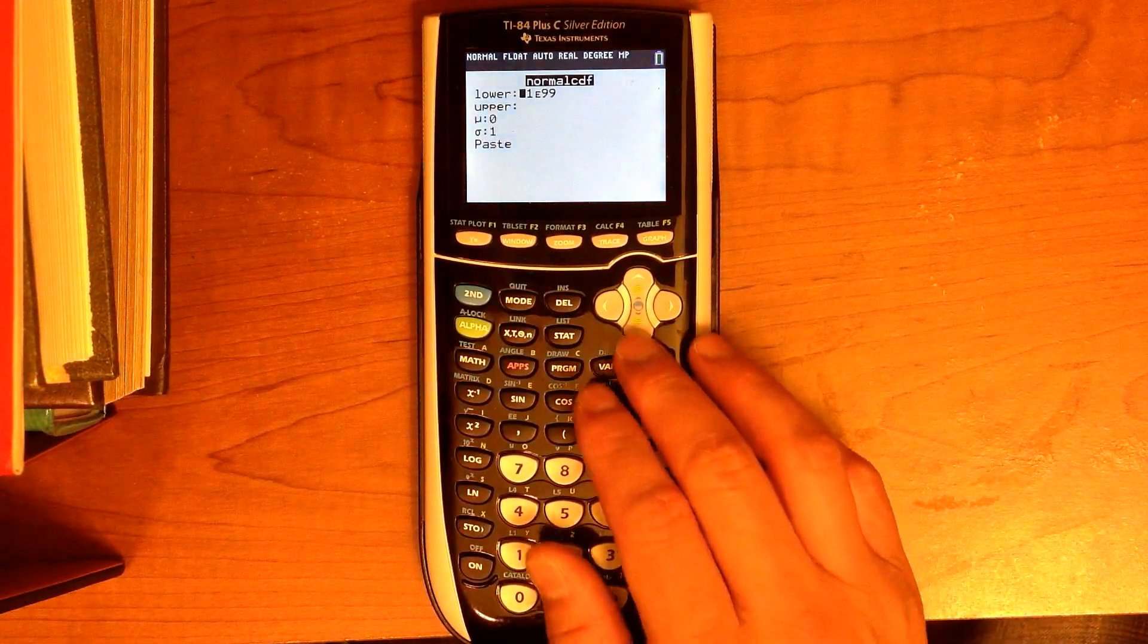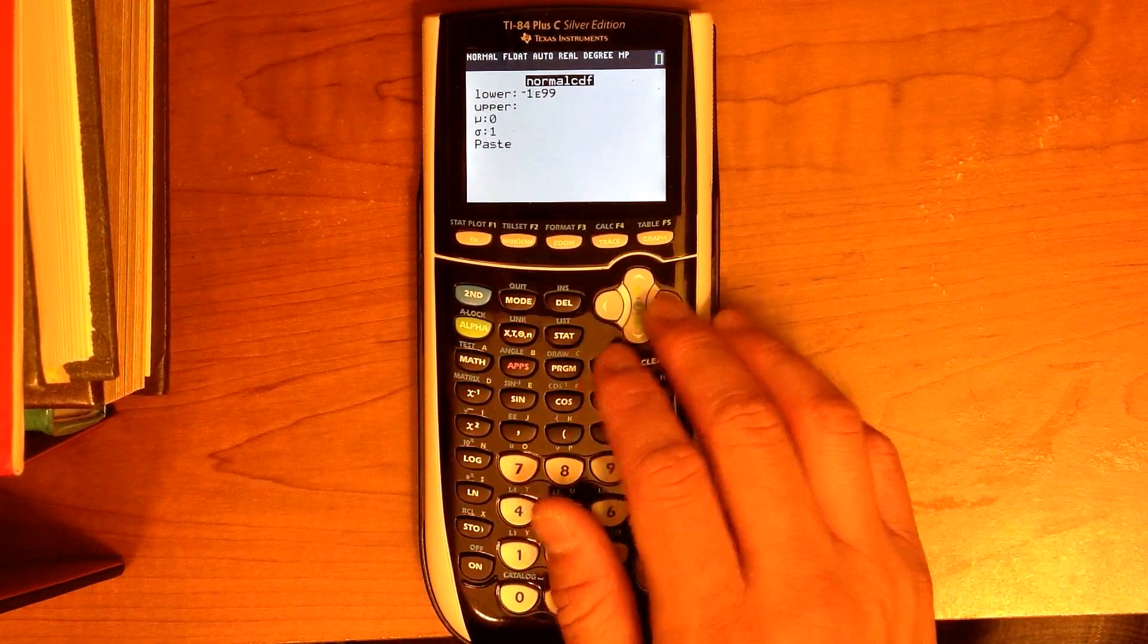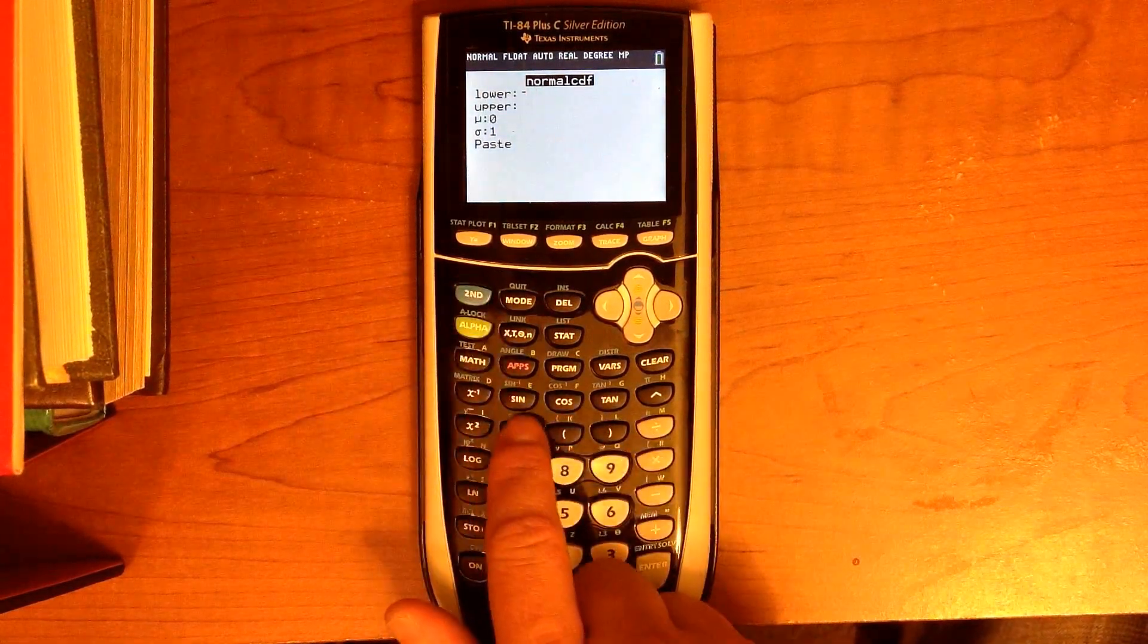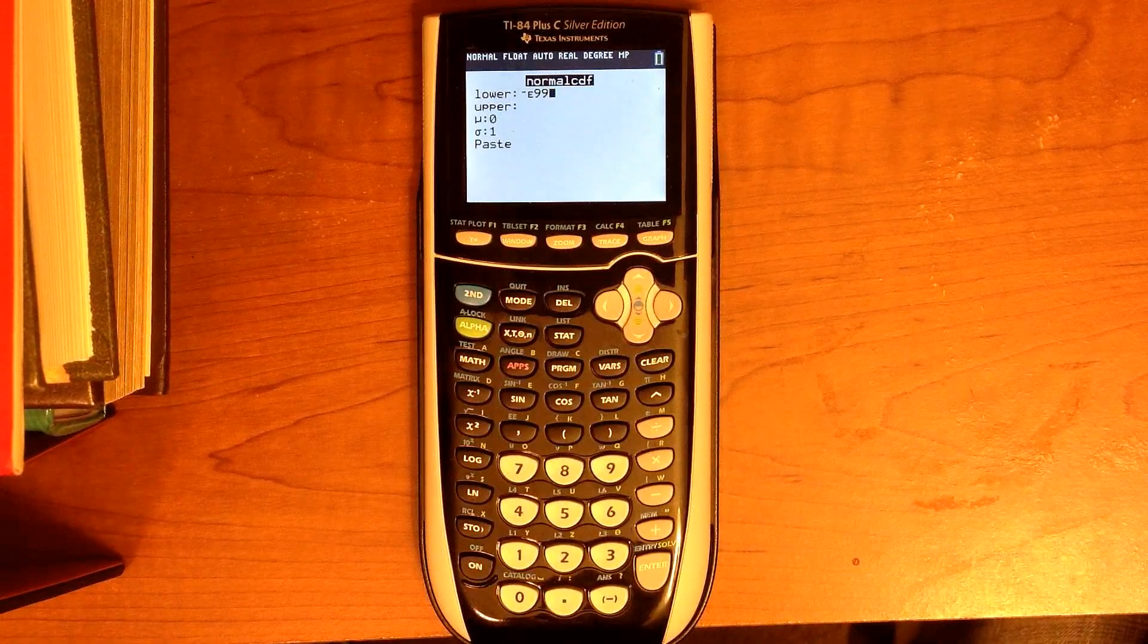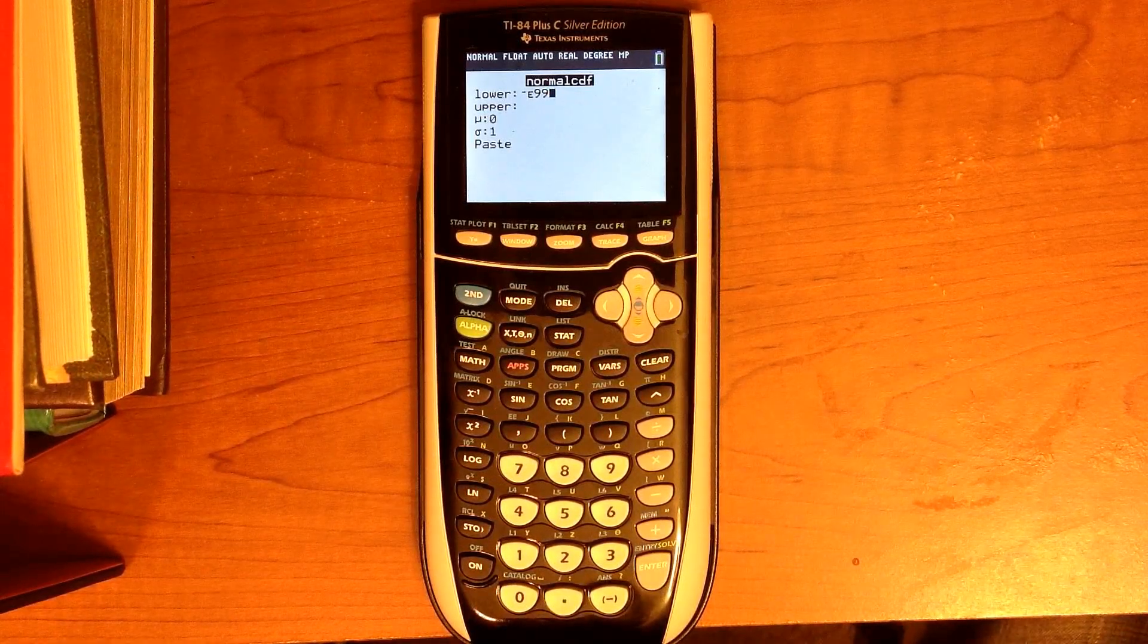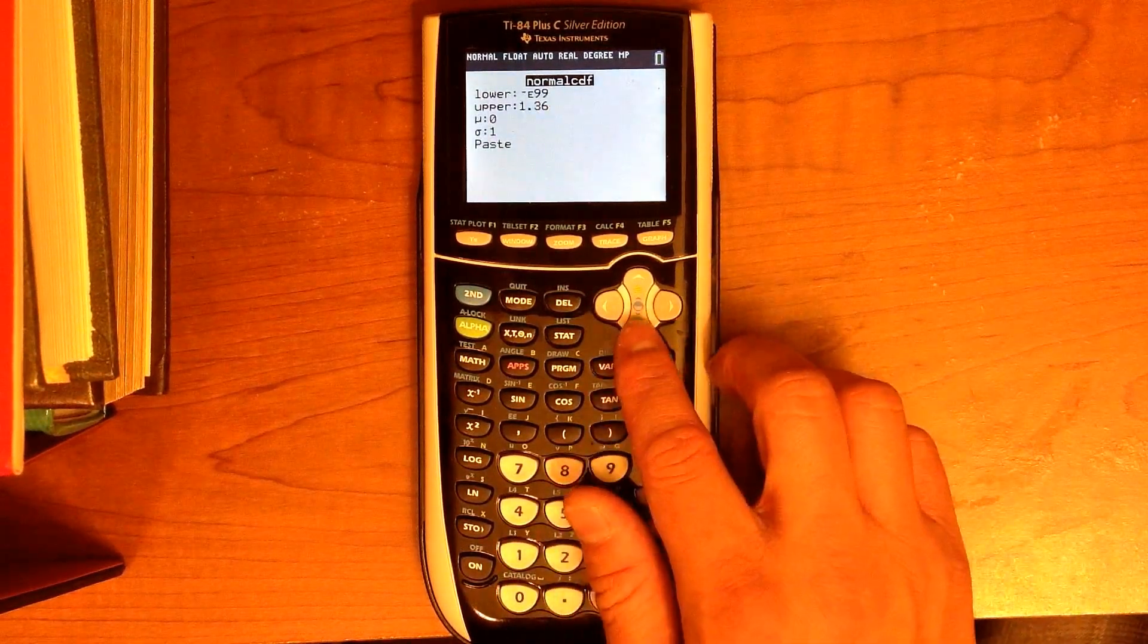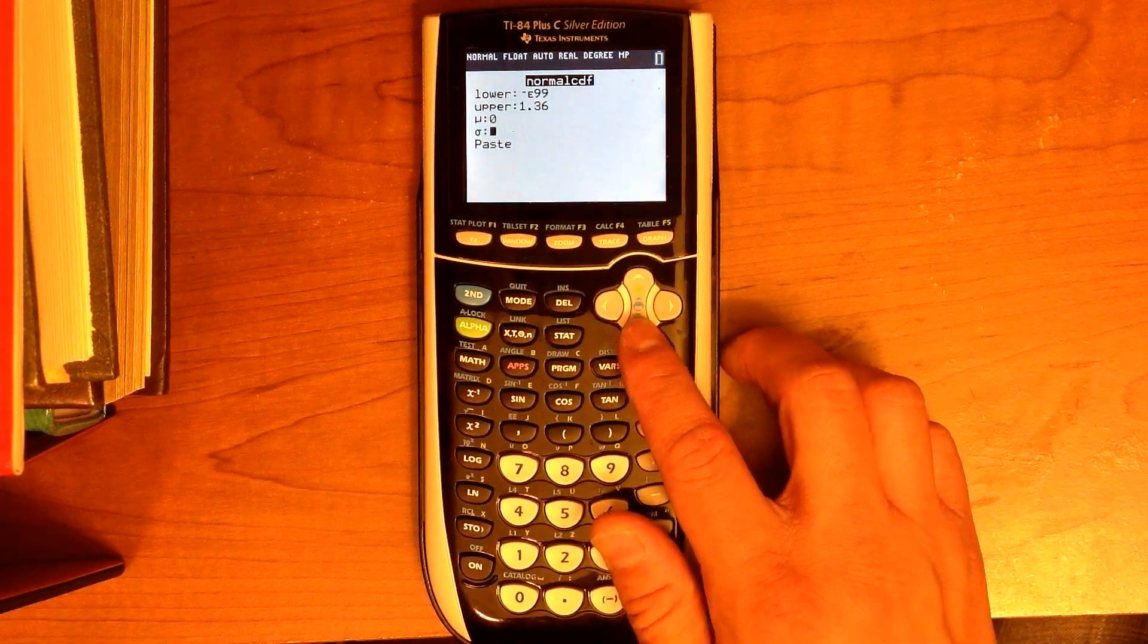For the lower limit, we're going to use negative E99. This is the default. If you don't know how to put it in, you put negative, then the E button which is second comma 99. This basically serves as negative infinity, a very negative number. The upper limit, we're going to use 1.36. We leave the mean at 0 and the standard deviation at 1 because we're using the standard normal curve with Z-scores.